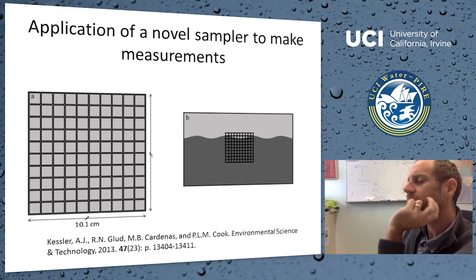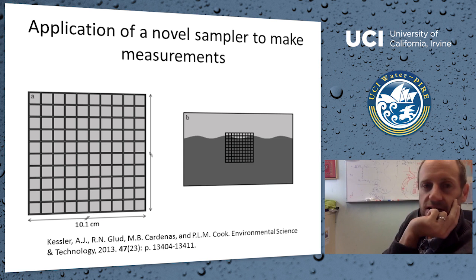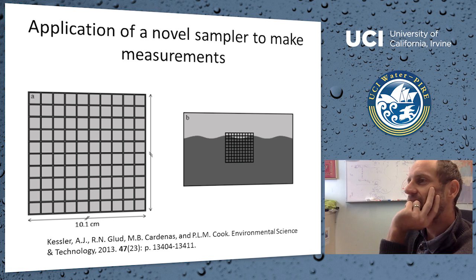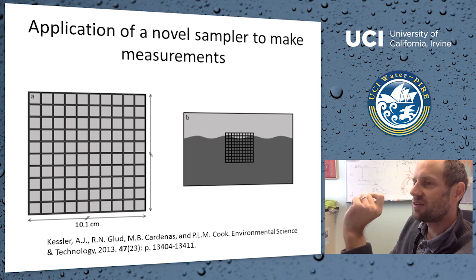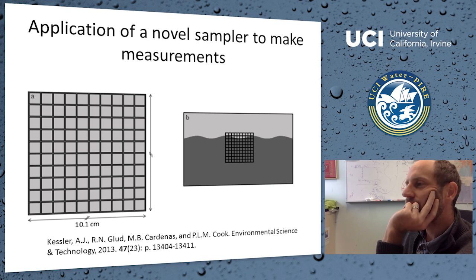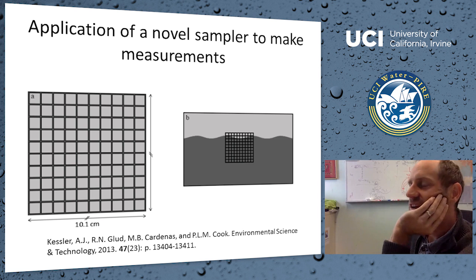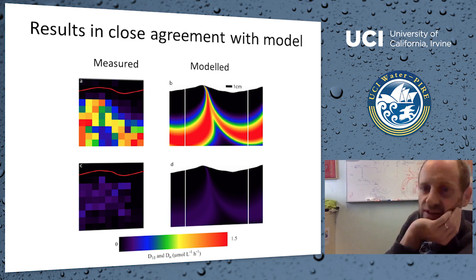What we can do is measure ¹⁵N₂ concentrations in the pore water to validate our models. Adam did this successfully in his honors project and continued in his PhD. We came up with a novel design: a gray grid sampler with wells about 5 mm deep filled with acrylamide gel, placed into the side of the flume. After adding tracer to the flume, we sampled those gel cells for ¹⁵N₂ and assembled a two-dimensional map of labeled nitrogen concentrations around the ripple.